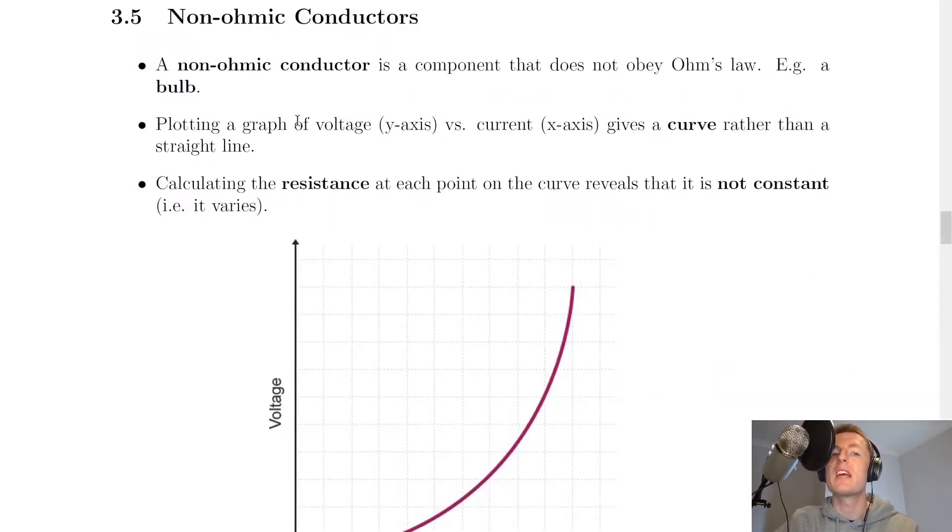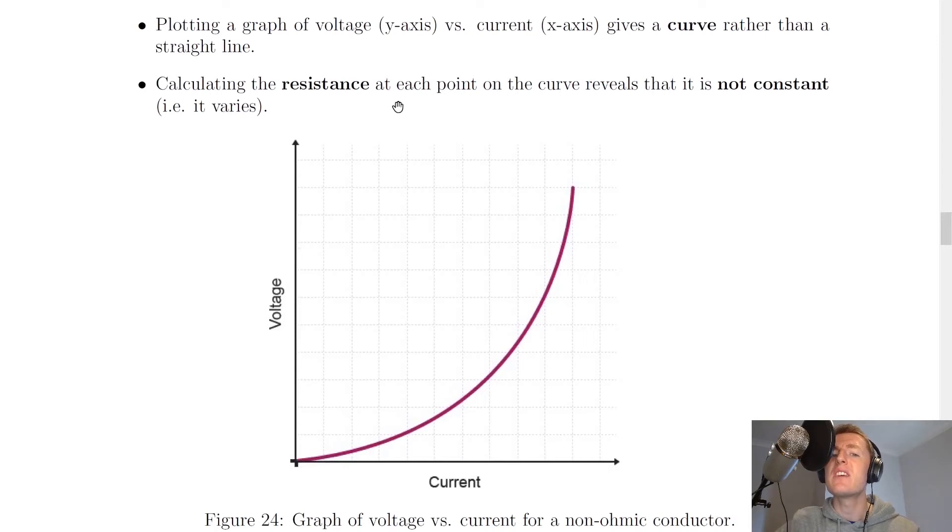So going back to the notes now, it says that plotting a graph of voltage on the y-axis versus current on the x-axis gives a curve rather than a straight line. Calculating the resistance at each point on the curve reveals that it is not constant, i.e. it varies.